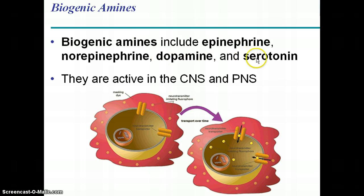Serotonin in particular is sometimes linked to consumption of certain foods — like capsaicin found in hot peppers — which can affect serotonin production. People can have greater feelings of well-being or release of endorphins as a result of consuming certain foods.